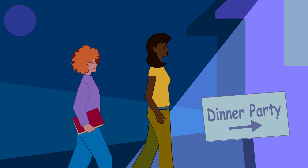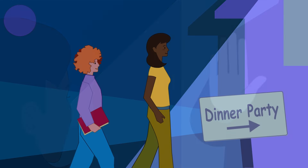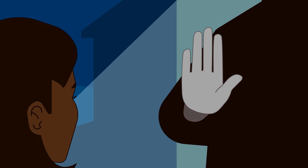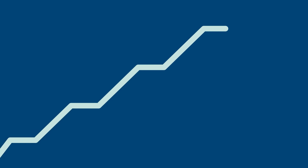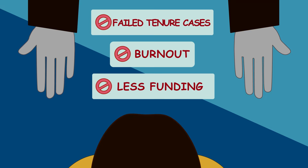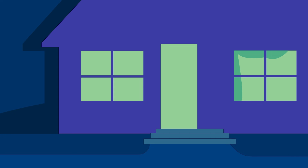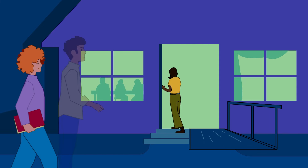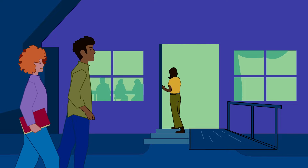To make research more equitable, it is first important to address the biases within the field of research. While overall diversity drives innovation and is crucial in problem solving, researchers from underrepresented backgrounds disproportionately face barriers, such as failed tenure cases, burnout, and less funding compared to their white counterparts, which may ultimately lead them to leave academia. Adopting an approach of flexibility, accommodations, and modifications can allow for a more representative and inclusive research community.